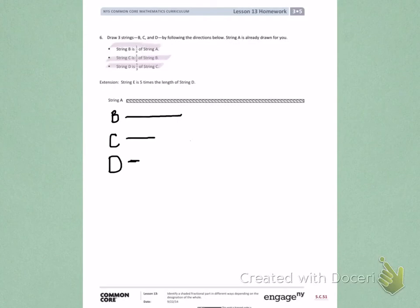Give the extension a try. Try to draw letter E, which it will tell you five times the length of string D. So use string D as your one-whole and make it equal five-fifths. Give it a try. Challenge yourself.